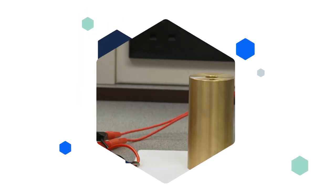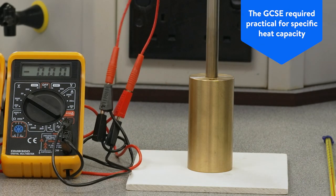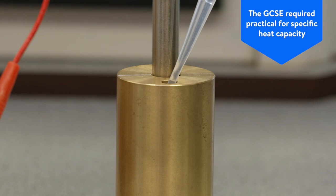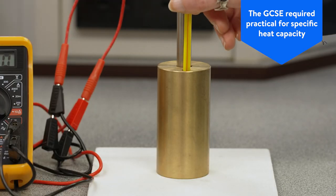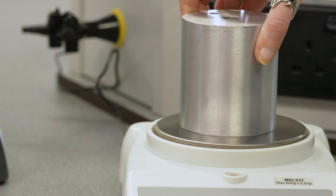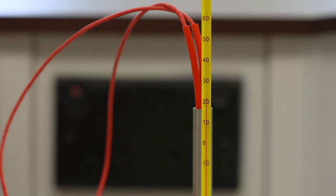Welcome to our video that will show you how to set up and carry out the GCSE required practical determining the specific heat capacity of one or more materials. Students will look at the mass and temperature change of a block calorimeter whilst it's being heated using an immersion heater.